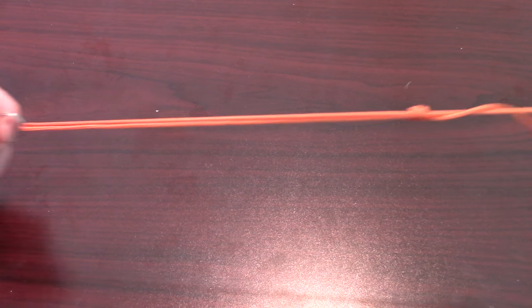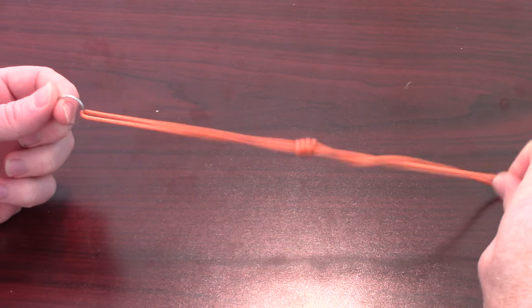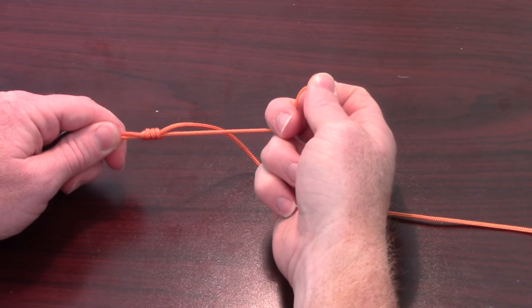Now we will pull on the main line until the loop holding the hook is at the size you want. Then pull tight on the tag end and secure that knot in tight.